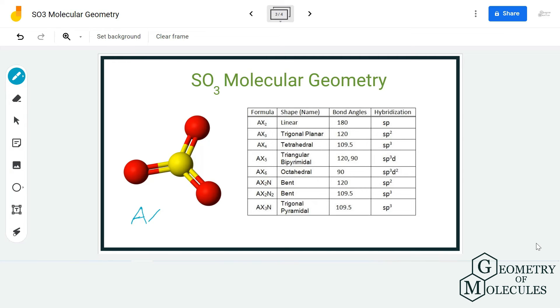For SO3, we have sulfur as the central atom, so we replace A. There are three atoms forming bonds with sulfur, so it will be AX3. As there are no lone pairs, the notation will be AX3 for this molecule.